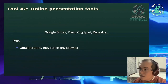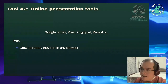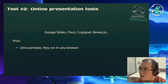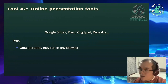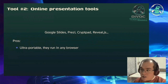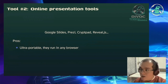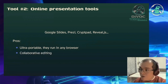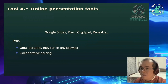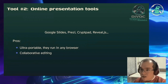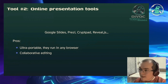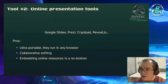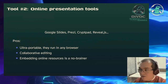The second tool: online presentation tools, for instance Google Slides, Prezi — used in education — GridPad, and also a web framework presentation tool called Reveal.js. These are all very ultra-portable because they run in any reasonably up-to-date browser. Most, if not all of them, have collaborative editing — in the case of Reveal.js, for instance, through a source version control system. And embedding online resources is directly a no-brainer because they are all online, so they can just put it into an iframe.